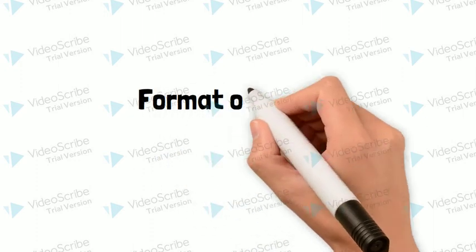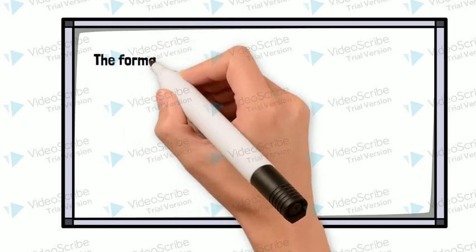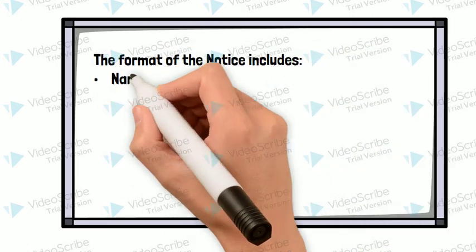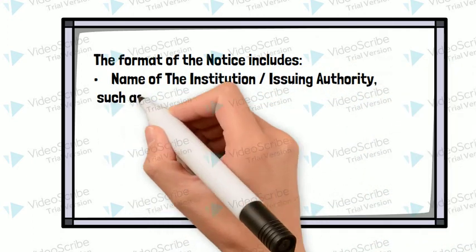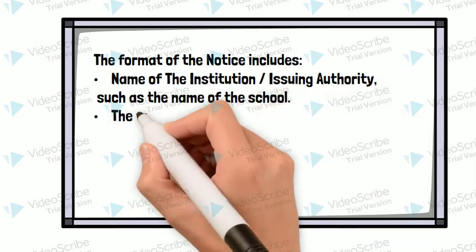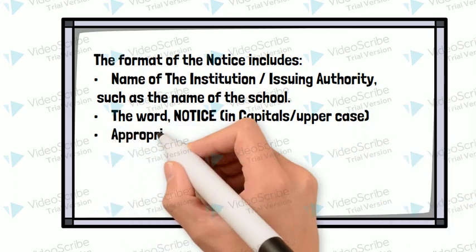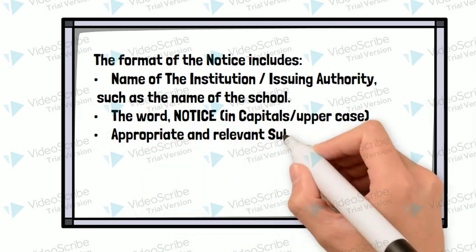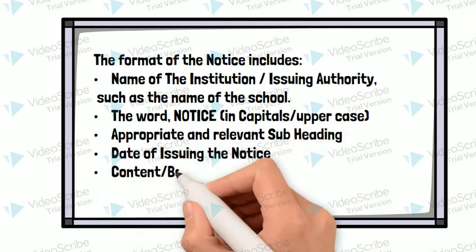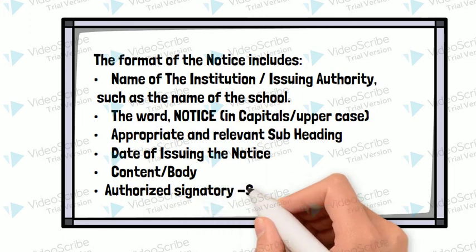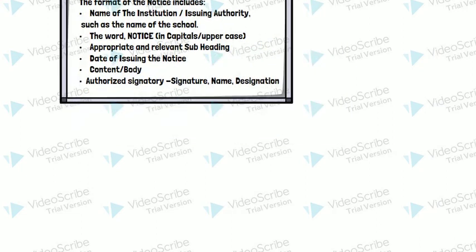Now we come to the format of notice writing. The format of a notice includes: the name of the institution or the issuing authority, such as the name of the school; the word NOTICE written in capitals; an appropriate and relevant subheading; the date of issuing the notice; followed by the body or content; and finally the authorized signatory, which includes signature, name, and designation.